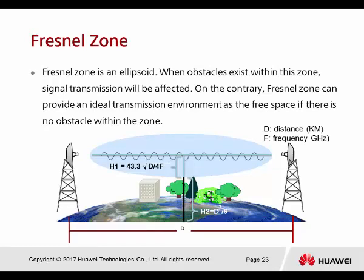This is the Fresnel zone, located in this circular area shown here. The Fresnel zone is mainly used for outdoor AP deployment projects. When planning the deployment, we need to calculate the distance between two different antennas, the height of the antenna, and how strong the antenna gain needs to be — all things to consider when deploying an outdoor AP.